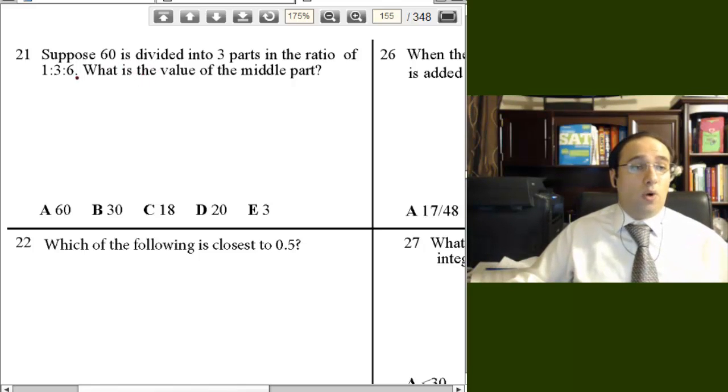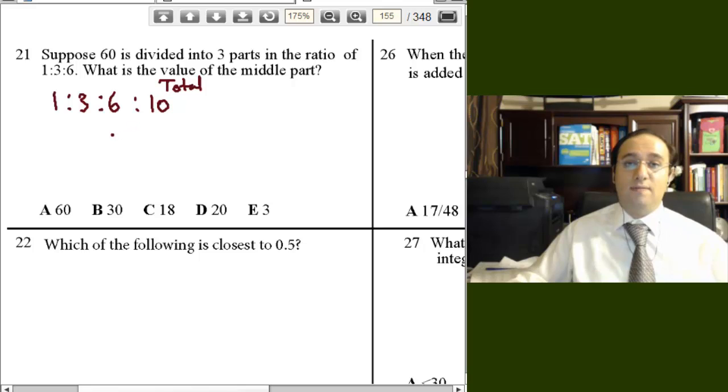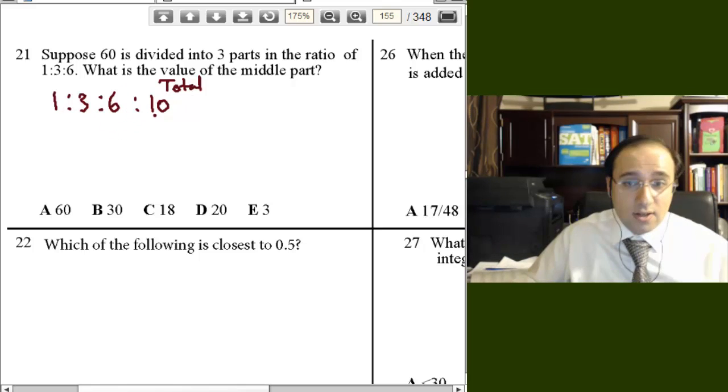So, 1 to 3 to 6, 1 to 3 to 6, to the total. What is the total? 1 plus 3, 4. 4 plus 6, 10. So, 1 to 3 to 6 to 10, 10 is the total. We add the parts of the ratio.